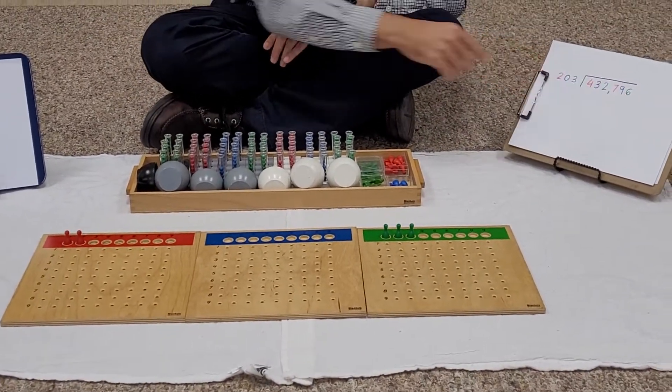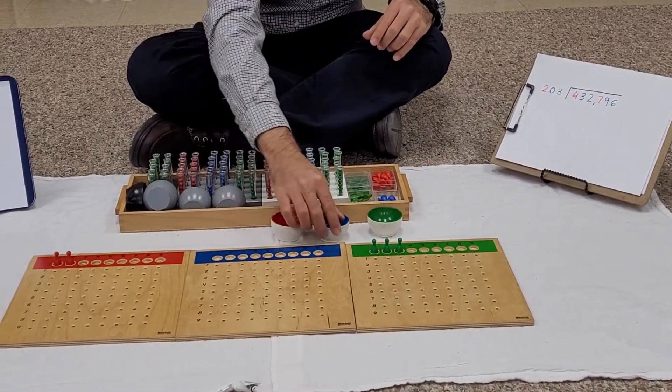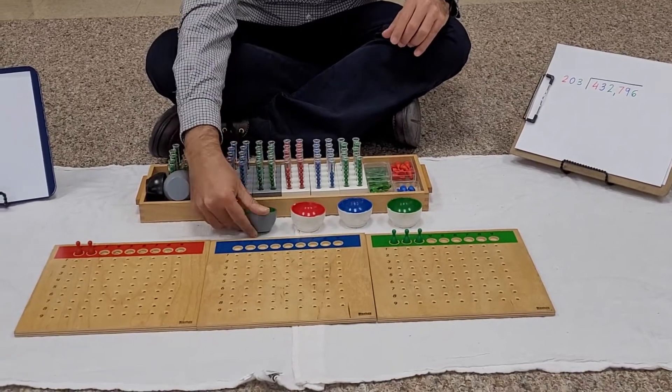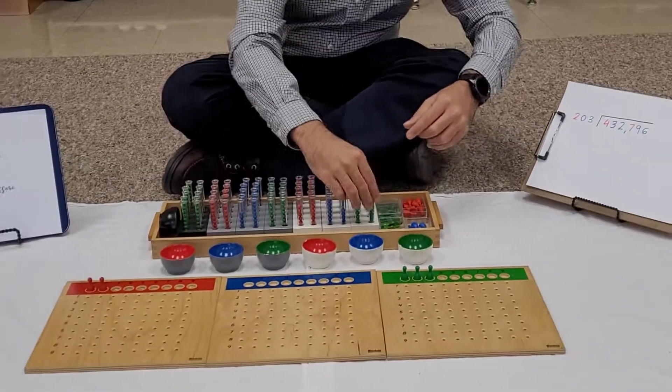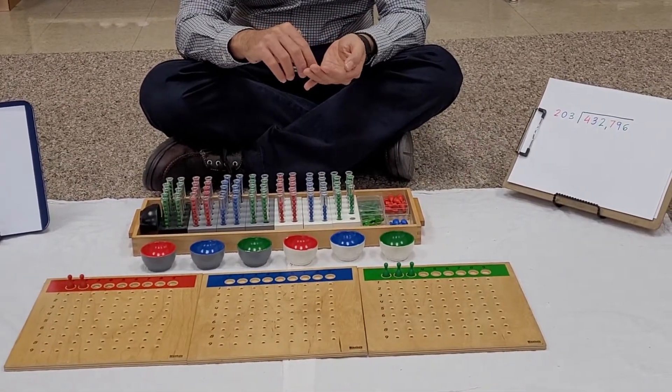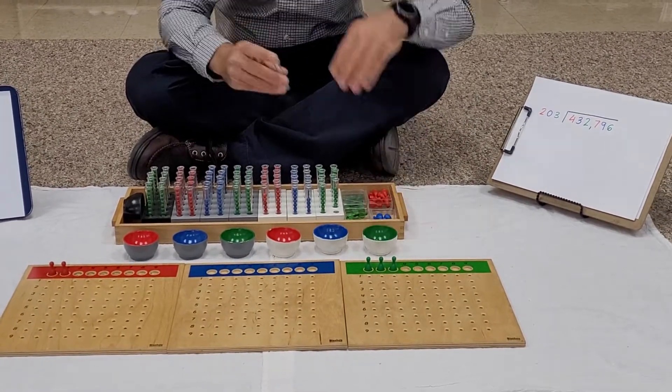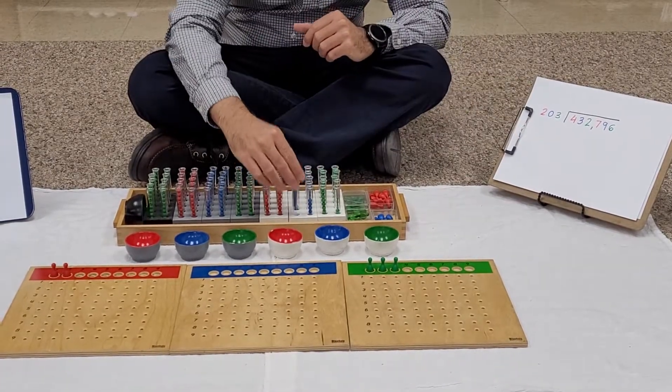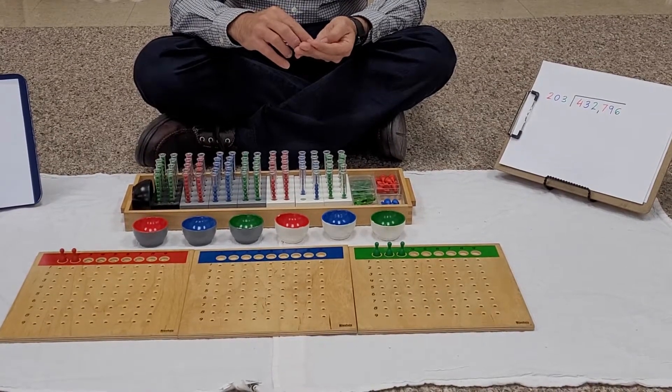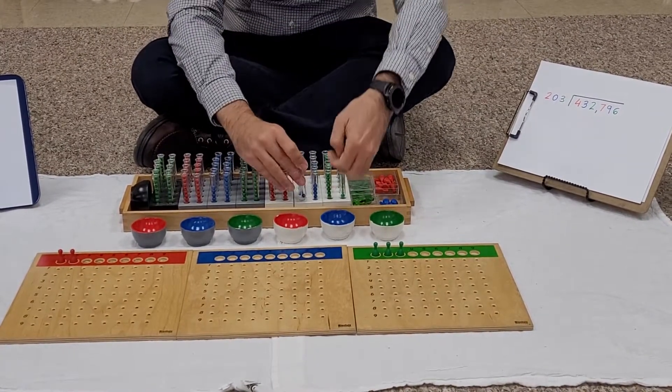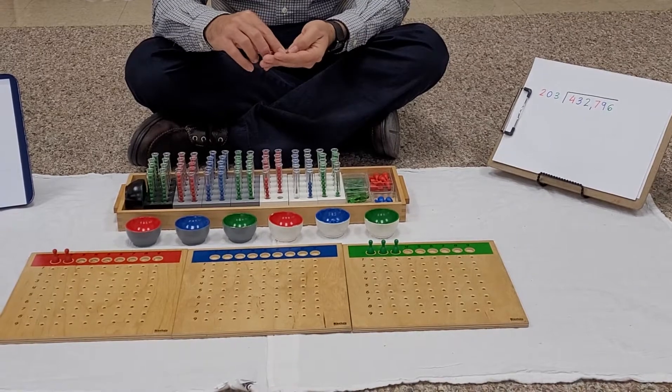I'm going to prepare the dividend. I'm going to need units, tens, hundreds, thousands, ten thousands, and hundred thousands. I have six units: one, two, three, four, five, and six. Then I'm going to need nine tens: one, two, three, four, five, six, seven, eight, nine. Then we need seven hundreds: one, two, three, four, five, six, seven.